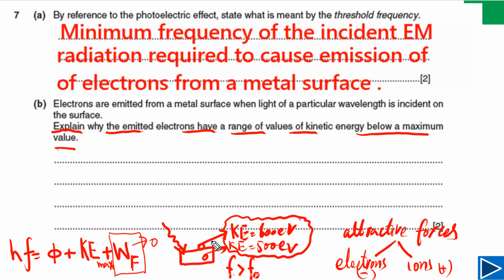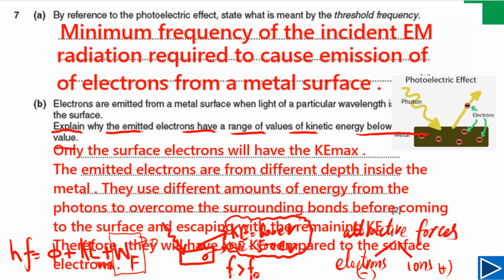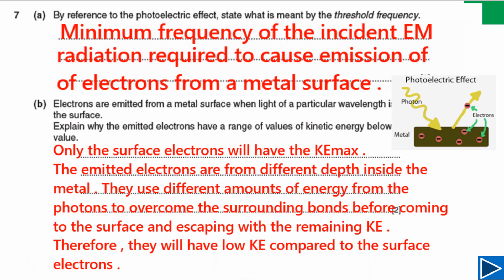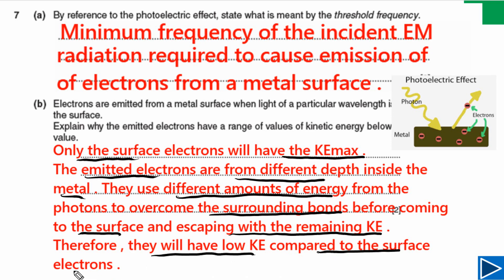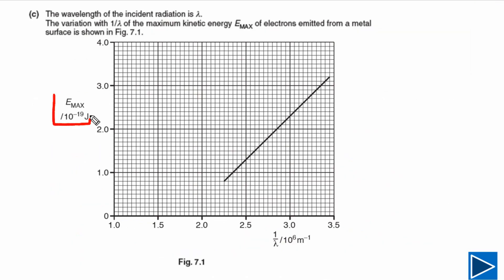So here is the final answer: only surface electrons will have maximum kinetic energy. Electrons emitted from different depths inside the metal have different amounts of energy because they have to overcome the surrounding bonds — the attractive forces — and do work against those forces to reach the surface, escaping with the remaining kinetic energy. Therefore they have lower kinetic energy compared to surface electrons, which have the maximum kinetic energy.